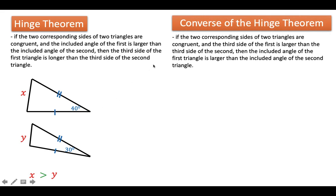For the converse of the Hinge Theorem, it states that if the two corresponding sides of two triangles are congruent and the third side of the first is larger than the third side of the second, then it follows that the angle opposite to it is also larger. So notice that obviously 12 is greater than 9.